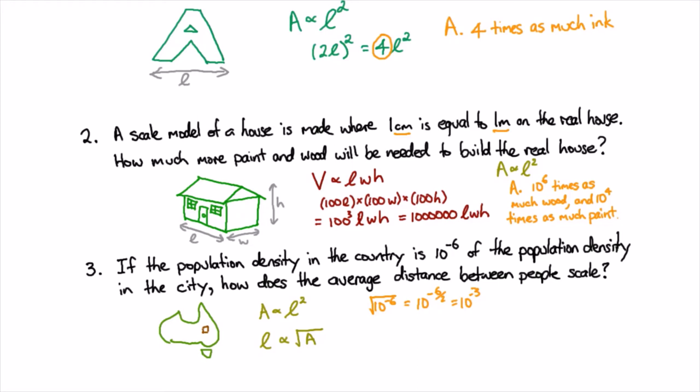I figured out which way around to put that just from common sense. Obviously if the density goes down then the distance between people on average is going to go up.